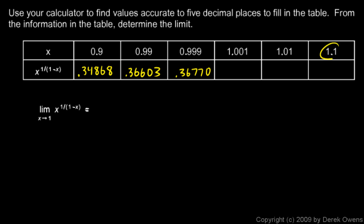And then to the right of 1, we'll start over here at 1.1. It's 0.38554. And I'm starting over here because I'm approaching a value of 1. At 1.01, it's 0.36971. And at 1.001, it's 0.36806.